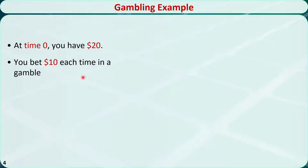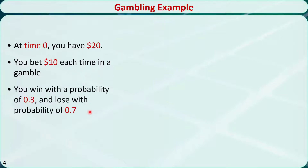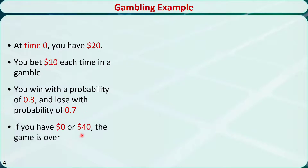Let's see an example. This is a gambling problem we introduced in the previous video. Suppose that you start from $20 at time 0. You bet $10 each time in a gamble. You win with a probability of 0.3 and lose with a probability of 0.7 in each gamble. You will continue to gamble until you have $0 or $40. $0 means you don't have any money left. $40 means you win $20 from your opponent and the opponent doesn't have any money left.